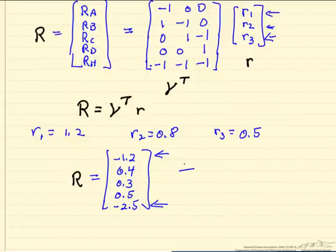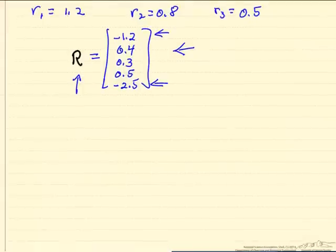In reality, these are the things we would measure in the laboratory. We measure concentrations as a function of time for individual species and calculate rates from that data. And the question is, if we know these rates, can we go back and calculate what the r value is?